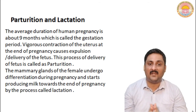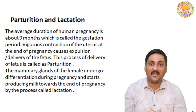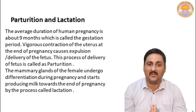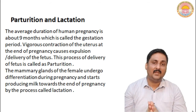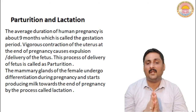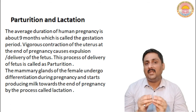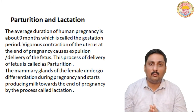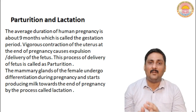Let us talk about parturition and lactation. The average duration of human pregnancy is about 9 months, which is called the gestation period. Vigorous contraction occurs in the uterus at the end of pregnancy, which leads to expulsion or delivery of the fetus. This is a very complex neuroendocrine mechanism. Initially, mild contractions of the uterus occur due to signals from the developed fetus as well as the placenta.